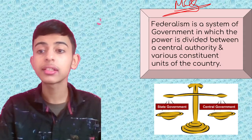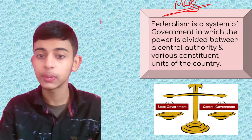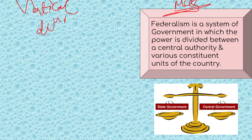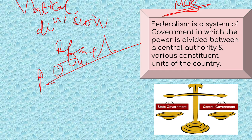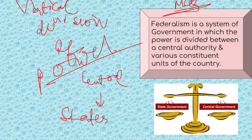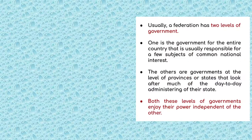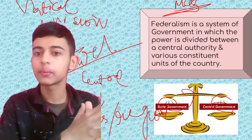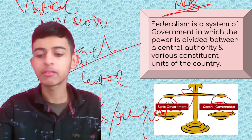Federalism is a system of government in which the power is divided between a central authority and various constituent units. You can relate Federalism with vertical division of power, since the power is shared between the central authority and its various constituent units — the states or different regions of the country. As you can see in this picture, there is state government and central government. We have taught you vertical division and power sharing — do check it out.